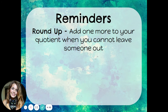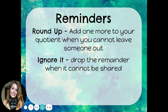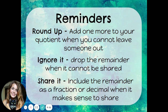Reminders. Round Up: add one more to your quotient when you cannot leave someone out. For this, we used the example of the students going to the museum — we needed to round up and add an extra car so that everyone was able to get to the museum; we couldn't leave anyone behind. Ignore It: that's when you drop the remainder, and you do this when the leftovers cannot be easily shared between the number of groups. The other option is to Share It — that's when you include the remainder as a fraction or a decimal, when it makes sense to share, like in the example of two girls sharing seven cookies.